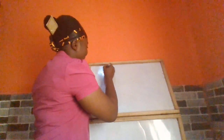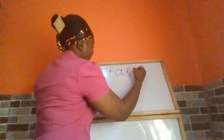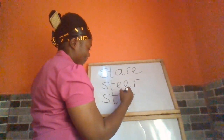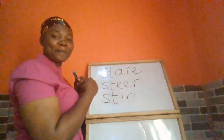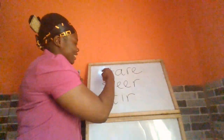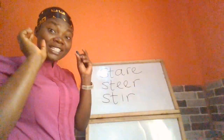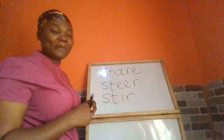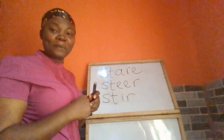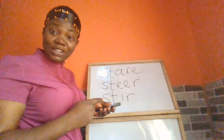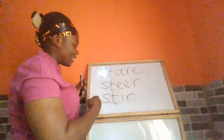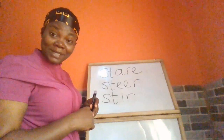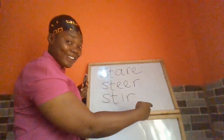These words are: 'stare' — to fix your eyes on something or someone for a long time. And 'stir' — to control the direction in which something or someone moves, or to mix a liquid substance together using a spoon.